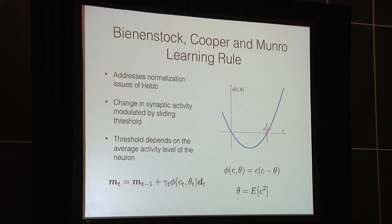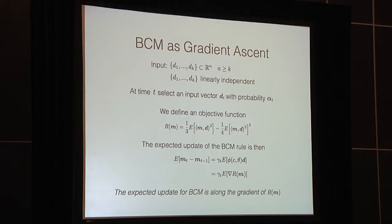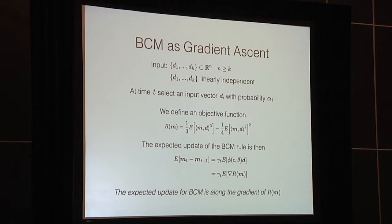For activity levels higher than the sliding threshold, the neuron becomes more selective for that input; if weakly activated, it will be somewhat inhibited. The classical BCM rule can be viewed as a kind of gradient ascent given a restricted input model: k data vectors in R^n where n ≥ k and the vectors are linearly independent, selected uniformly at random with probability distribution alpha. You can define an objective function in the activity level of the neuron to each of these inputs, and show that the expected update of BCM performs gradient ascent in this objective. So BCM is performing a kind of stochastic gradient ascent in R.